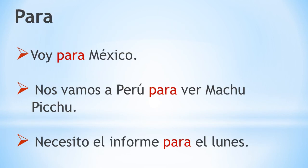PARA. Para is used when you address towards the destination. Por ejemplo, voy para México. I am going to Mexico. Secondly, it is used with purposes and intentions. Por ejemplo, nos vamos a Perú para ver Machu Picchu. We are going to Peru to see Machu Picchu. Lastly, it is used with deadlines. Necesito el informe para el lunes. I need the report by Monday.